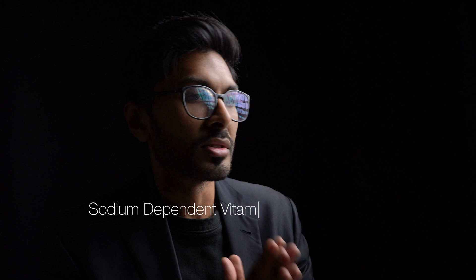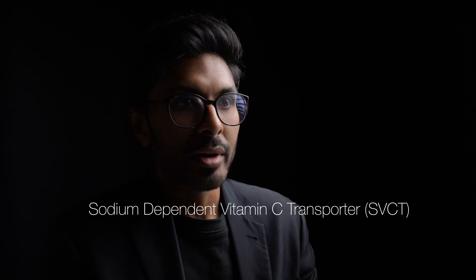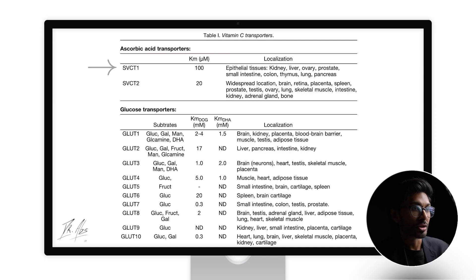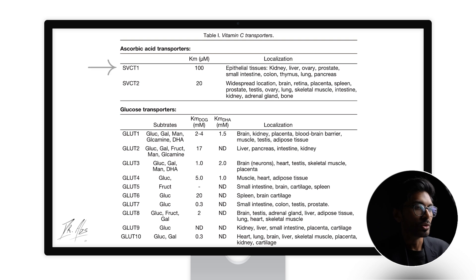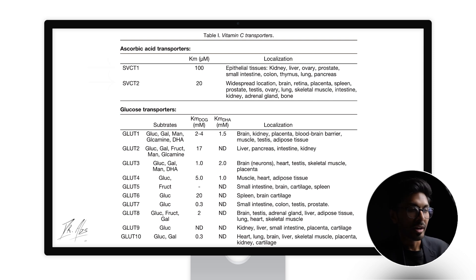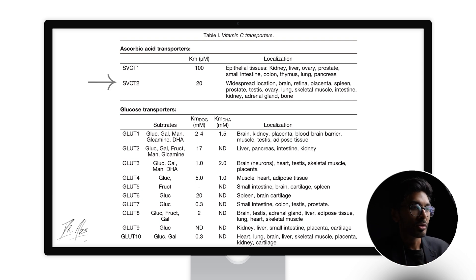SVCT stands for sodium-dependent vitamin C transporter. SVCT1 is mainly in the epithelial tissues like intestines and kidneys — epithelial tissues are the linings on surfaces — and SVCT2 is in most other tissues. So there's a geographic component to the differences between SVCT1 and SVCT2.